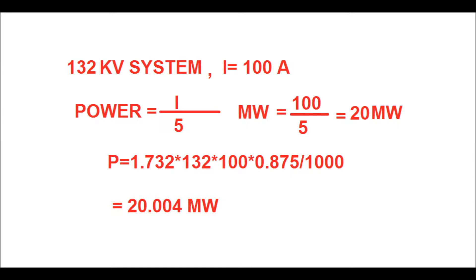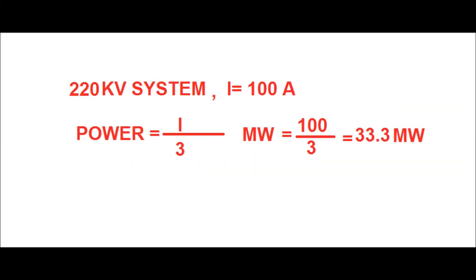...with power factor 0.875, divided by 1000 to get the value in megawatts, you get P = 20.004 megawatts. So the thumb rule for calculating power in megawatts for a 132 kV system is: whatever be the current, just divide by a factor of 5.